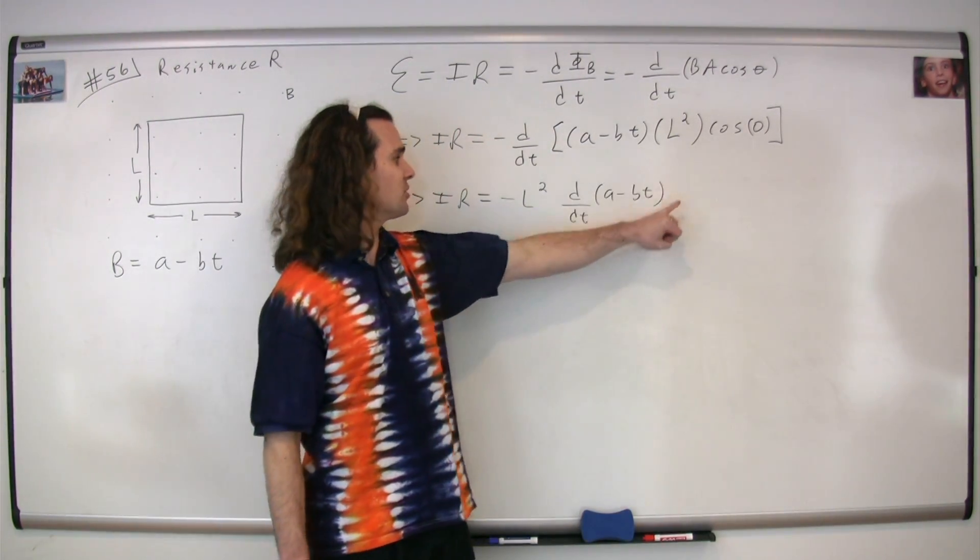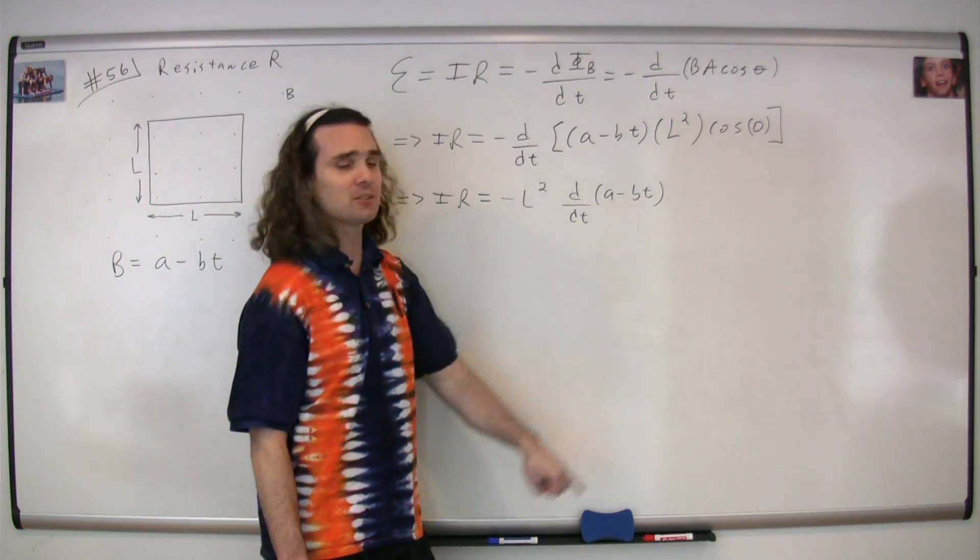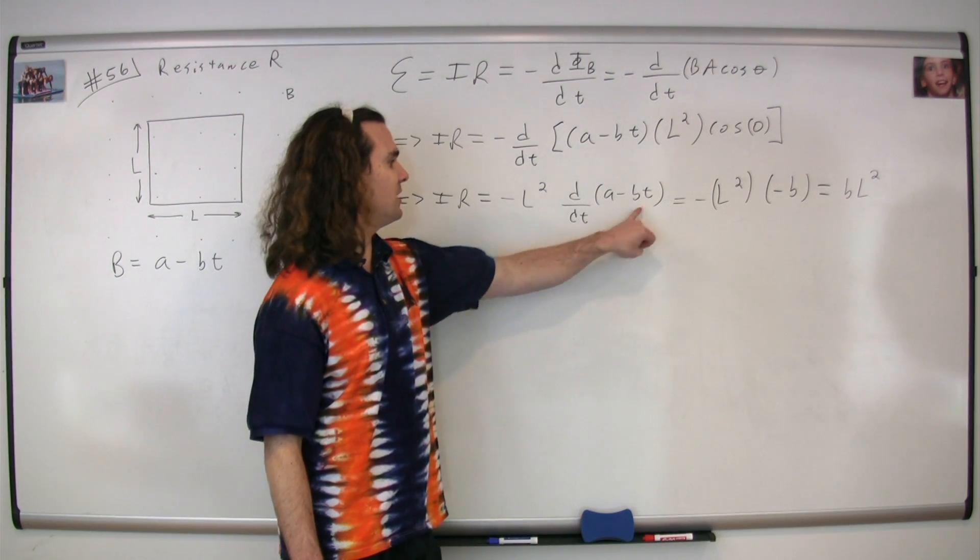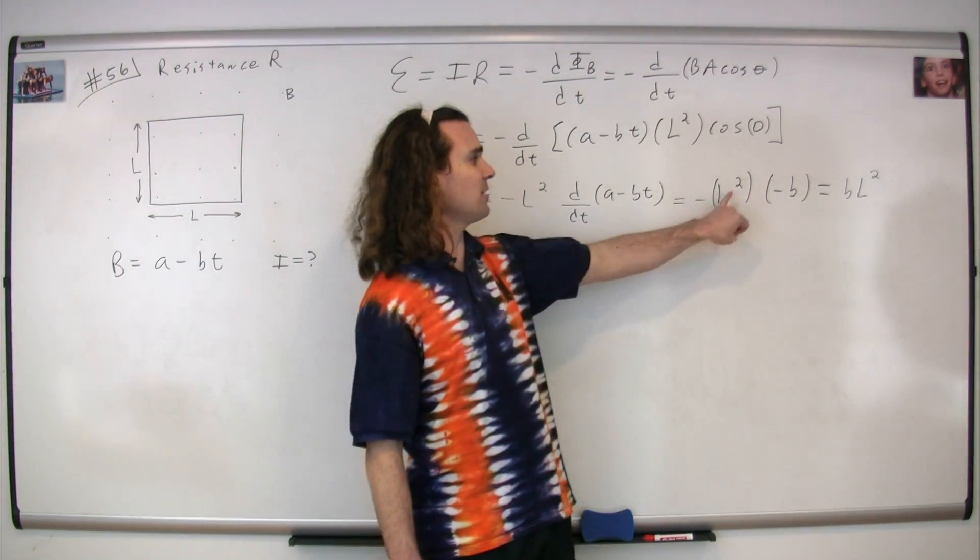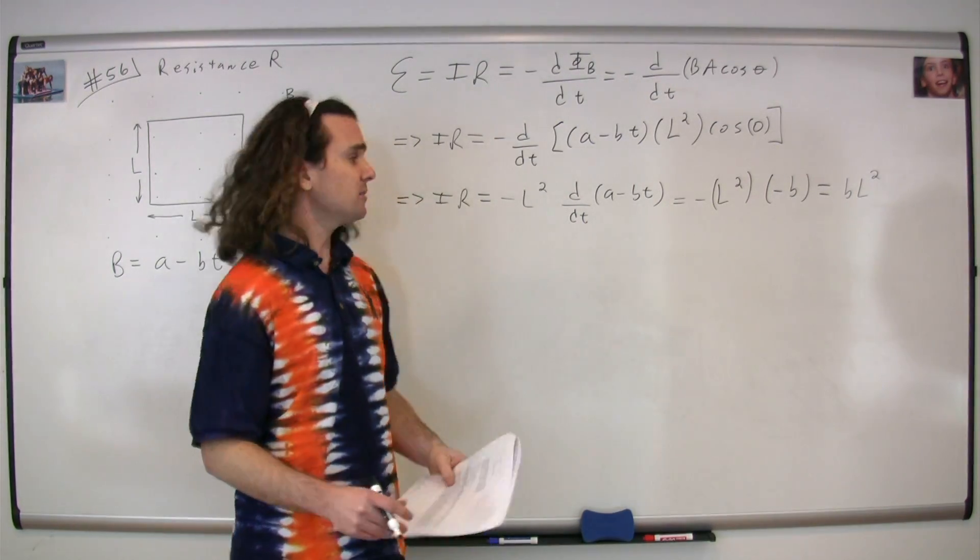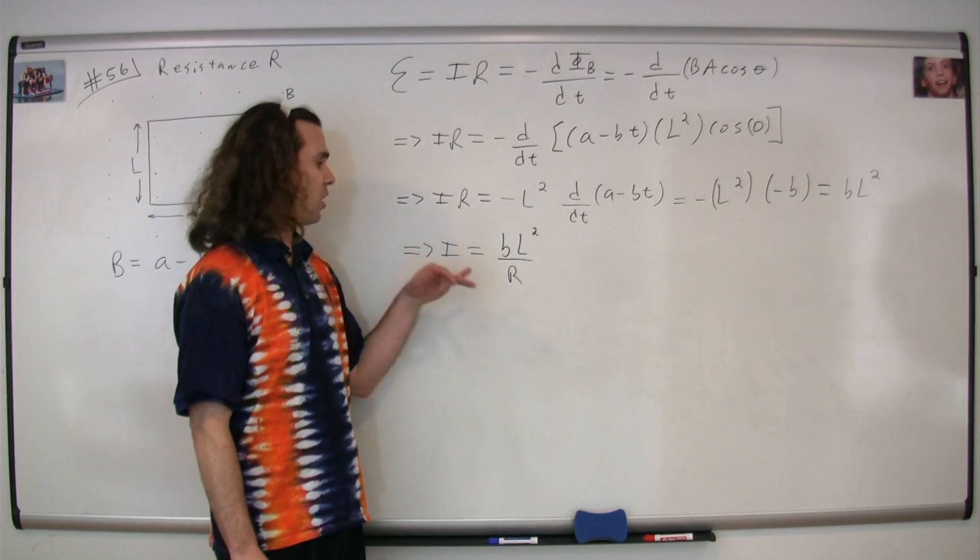Cosine of zero is just one. L squared is a constant, so we can bring it out from the derivative, and now we just need to take the derivative of a minus bt. The derivative of a minus bt with respect to time works out to be negative b. Multiplying negative b by negative L squared gives us bL squared. Solving for the current, we get the current is equal to bL squared over R, the resistance.